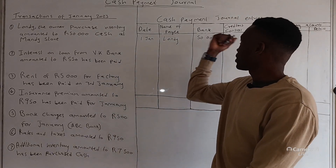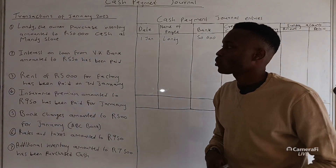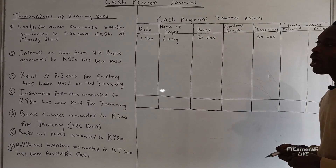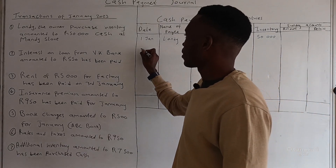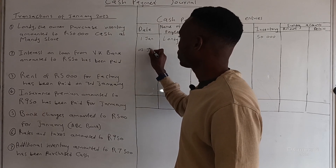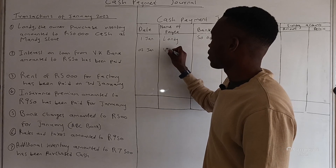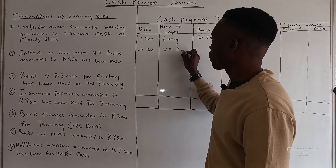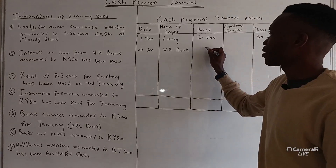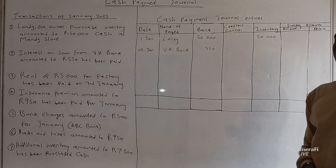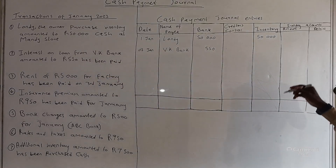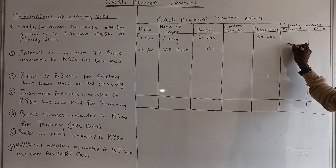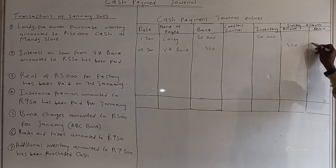Transaction two: interest on loan from VK Bank amounting to 550 has been paid on 2 January. The name of the bank is VK Bank and the amount is 550. Creditors control is not affected and it is not inventory — this is interest expense. Interest on loan is the same as interest expense, which means it goes to the sundry account where we record it as interest expense.